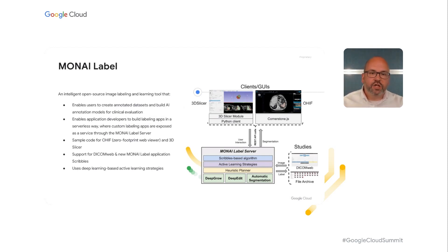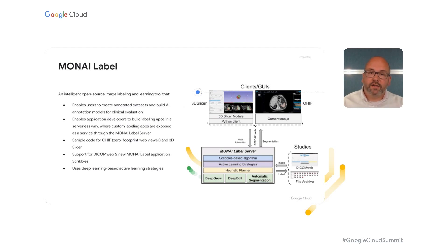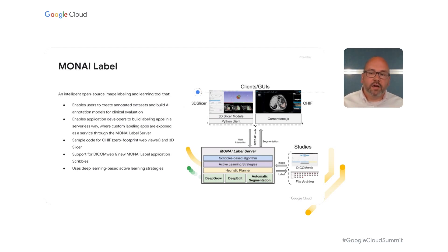MONAI Label ships annotation results back to the viewer for rendering. It even has an active learning component and gets smarter over time, so as we annotate imaging studies the accuracy keeps improving. All of this, connected with our medical imaging viewers, helps enable radiologists and clinicians as part of their annotation process.